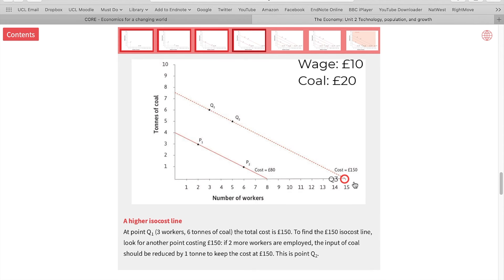Now, you might ask, what about technology Q3 here? Yes, this technology is using less coal, but much, much more workers. So, the total cost of this technology is still higher than P1 and P2.